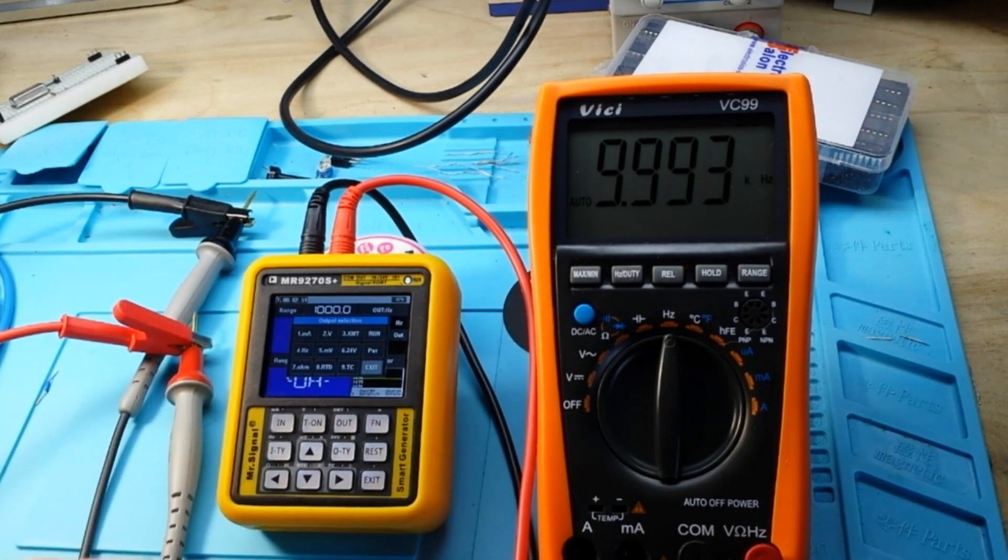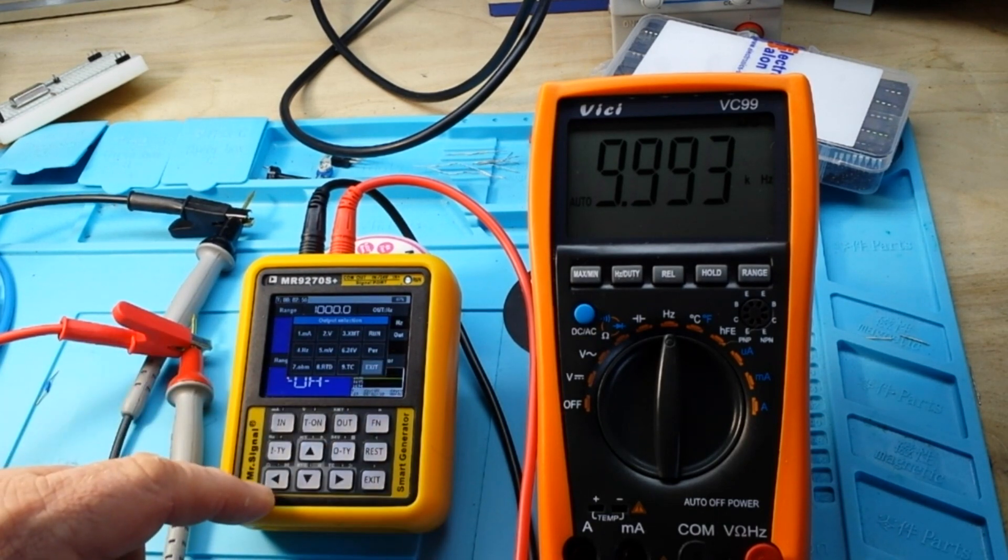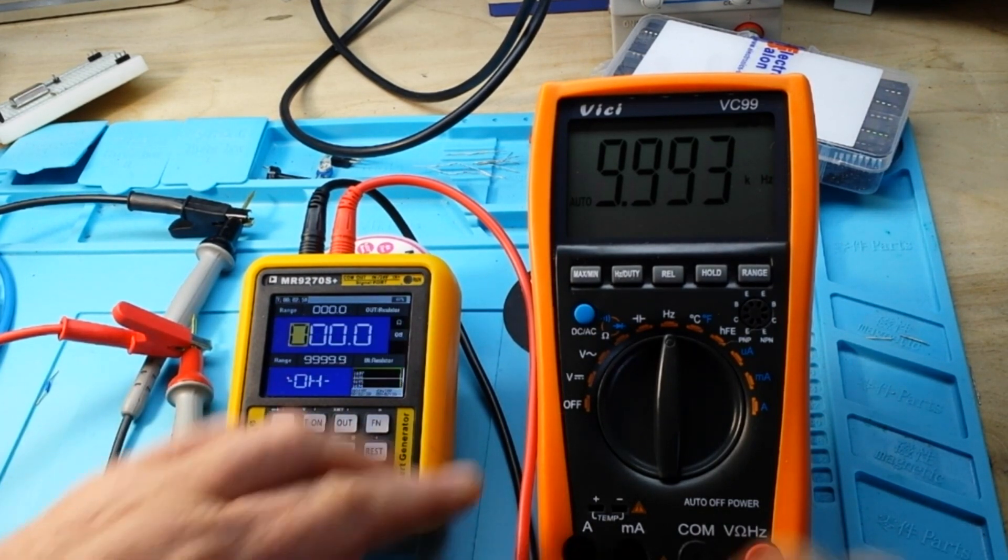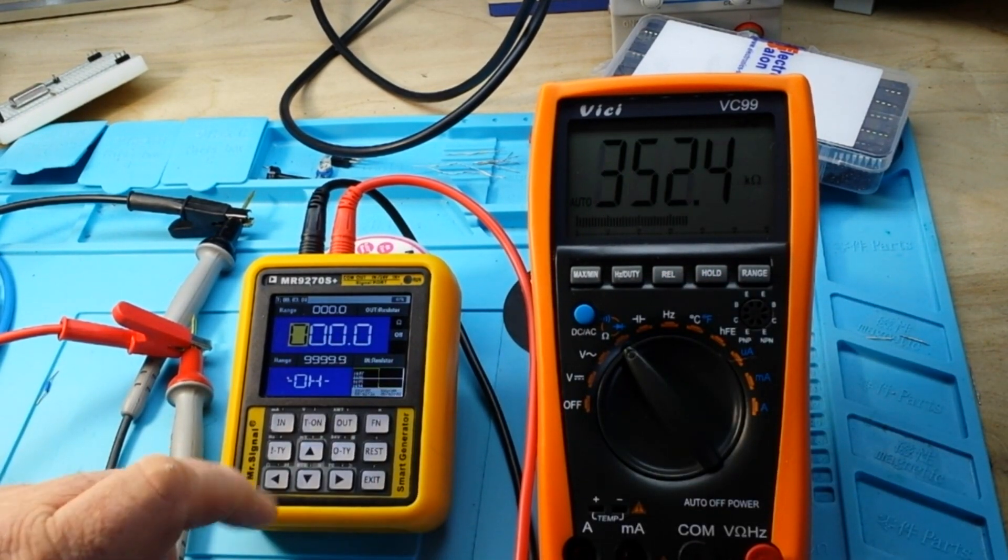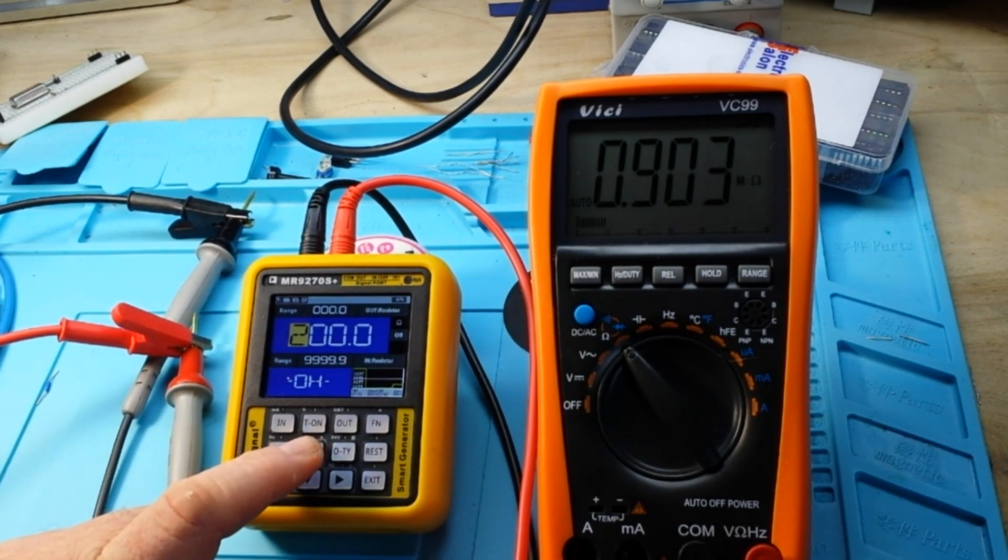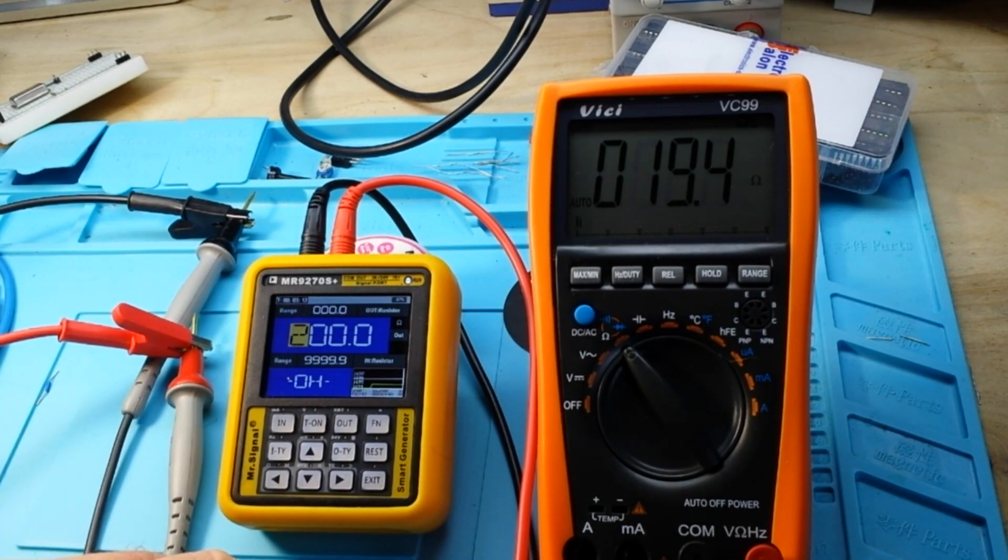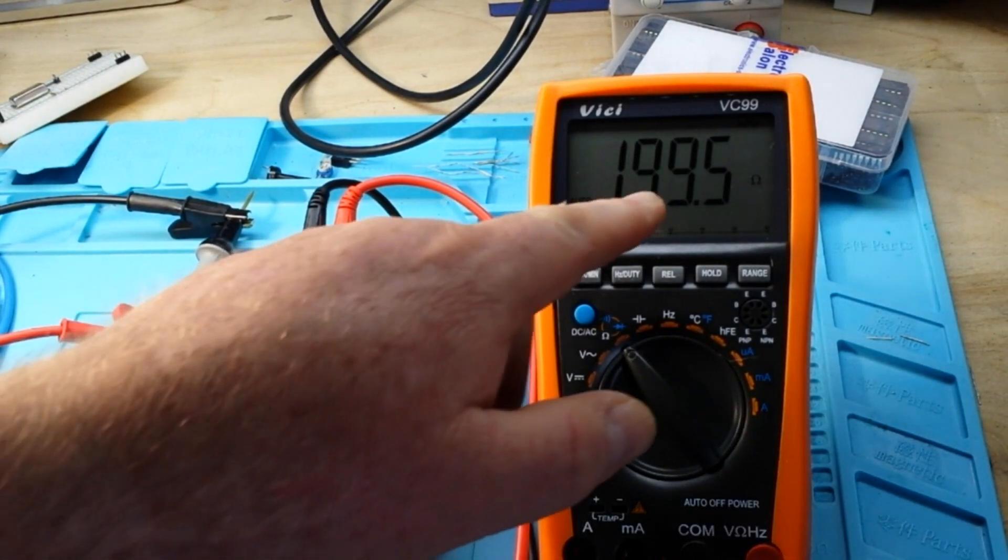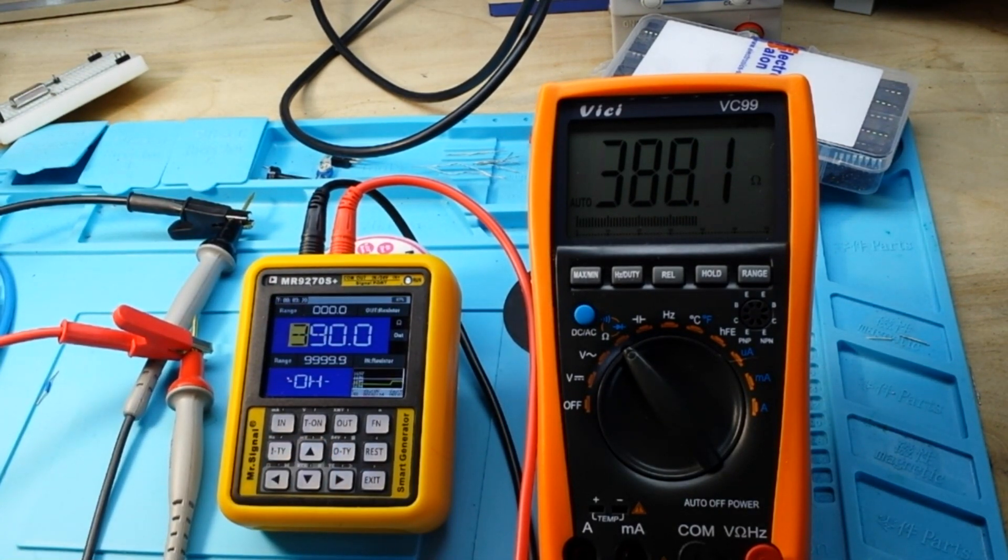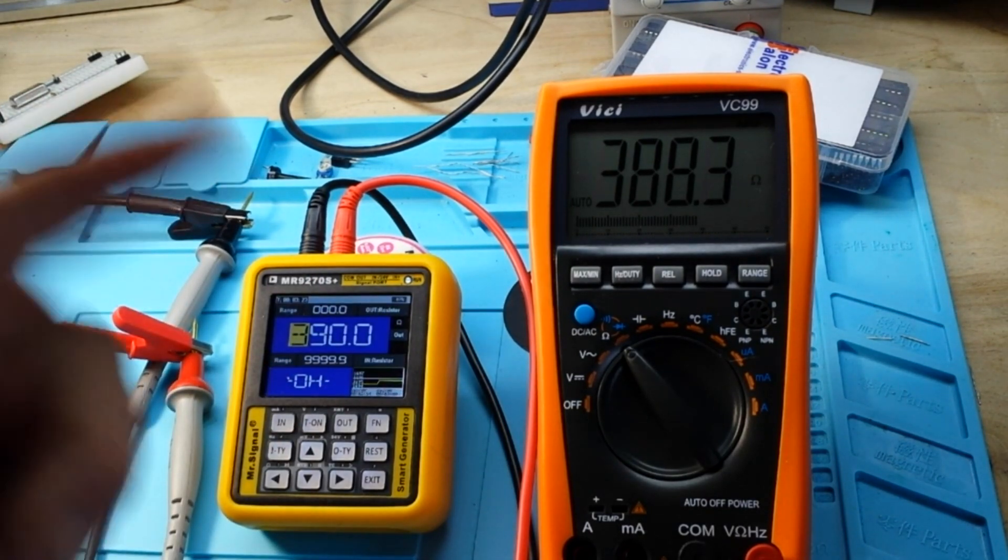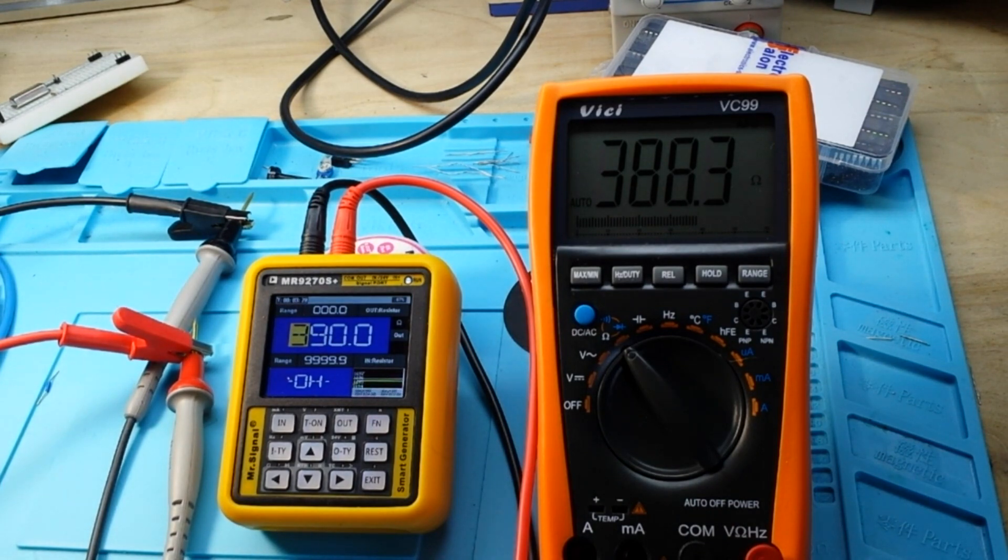So let's see, did we miss anything? Well it says does resistance. I haven't tried that. Let's try it. So we'll put this guy here on resistance and we'll turn it on. So it should be outputting 200 ohms, 199.5, 390 and 388. Close enough. Very, very cool. I really like this. This could turn out to be a very useful tool.